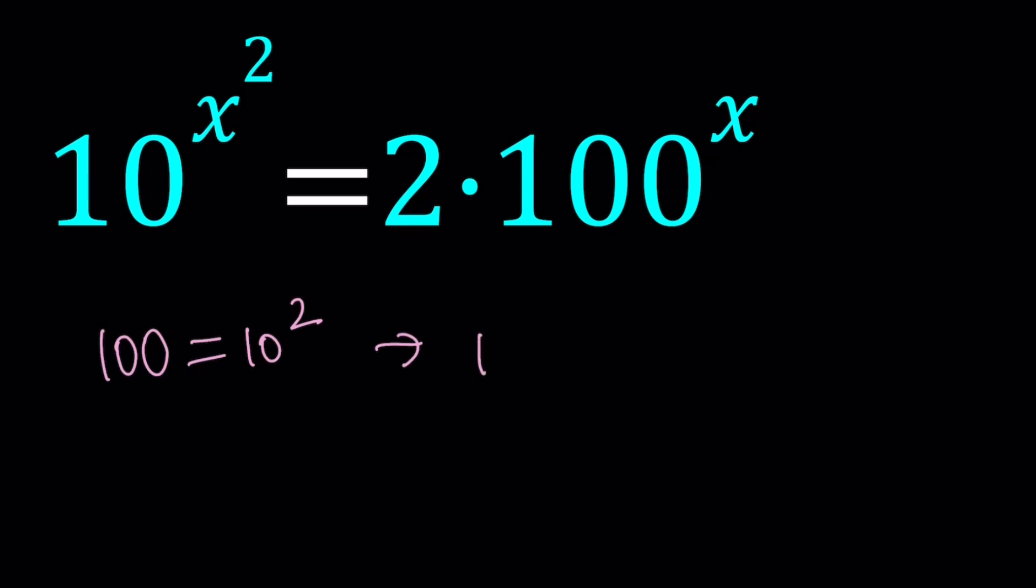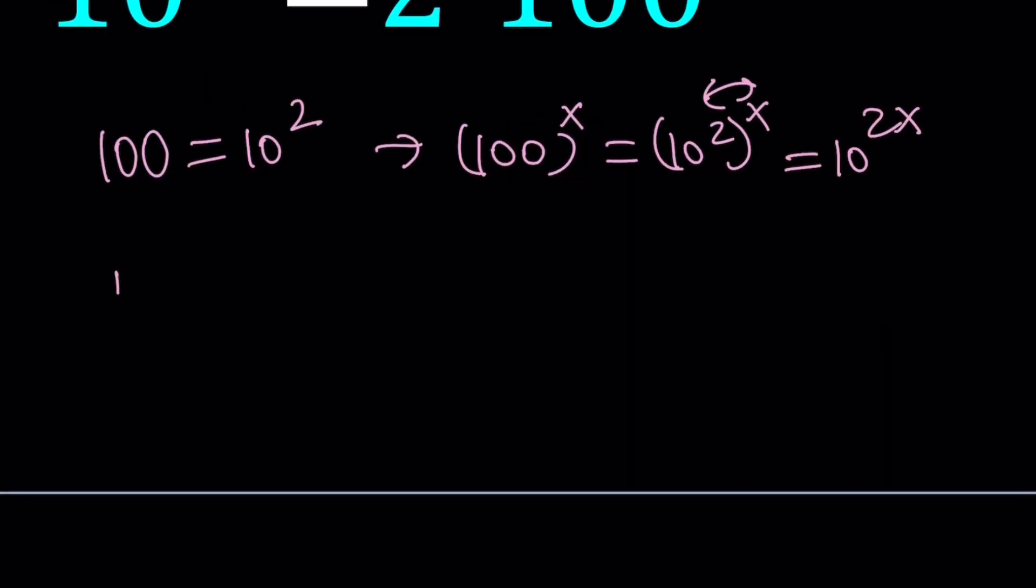And then from here if you raise both sides to the power x then you will get 10 to the power 2 to the power x which is the same as 10 to the power 2x because we're supposed to multiply the exponents. So let's replace 100 to the power x with that and rearrange our equation. So 10 to the power x squared equals 2 times 10 to the power 2x. Now at this point it makes sense if you put the tens together because we're basically dealing with powers with the same base.